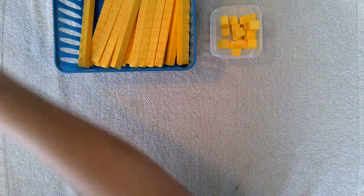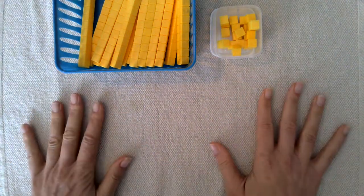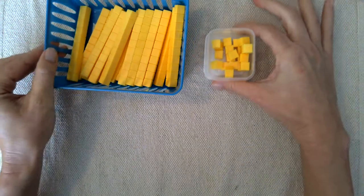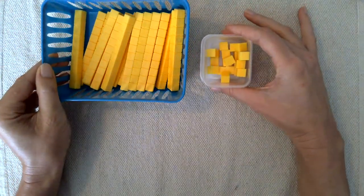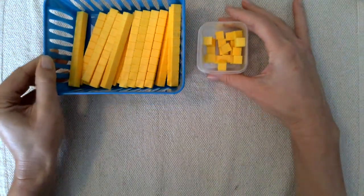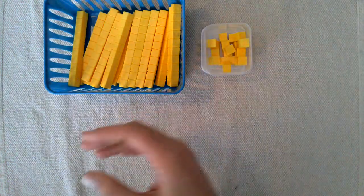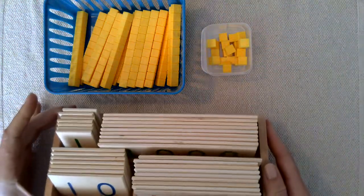This is a small group activity. The prerequisite is that the children should have a good understanding of place value and base 10 from working with this material as well as the number cards previously.